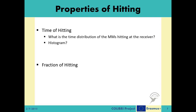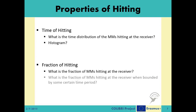The second property is the fraction of hitting. Following the macroscopic theory of diffusion, we know that in a 3D simple diffusion case, not all of the released MMs are expected to hit at the receiver, even if we wait forever. Then the relevant question becomes: what is the fraction of MMs hitting at the receiver when bounded by some certain time period? This question will be our key question, considering the slotted time structure of the CVD system.